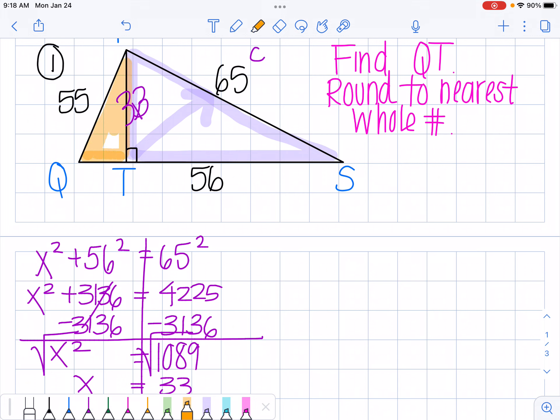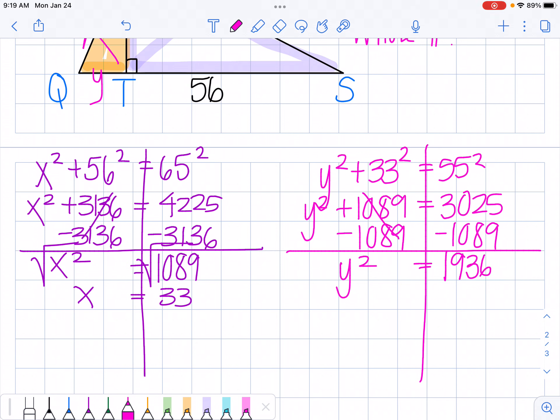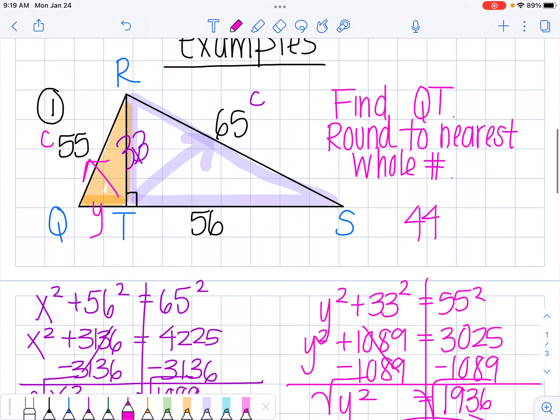Now I'm going to use this right triangle, and this is going to be my c value across from the 90 degrees, and I'm going to solve, we'll call it y. So I'm going to say that y squared plus 33 squared is equal to 55 squared. Square both sides. I know 33 squared is 1089 from my last problem I just did. 55 squared is 3025. I'm going to subtract 1089 from both sides and I get 1936. And to cancel out my squared, I'm going to square root, and I get 44. So 44 is equal to QT.